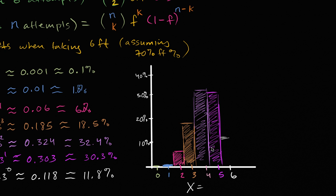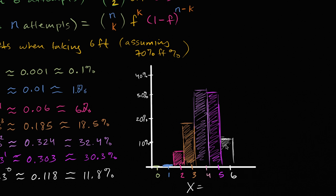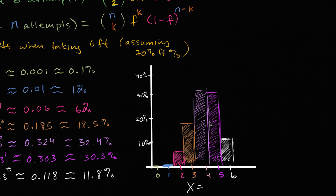Really this whole video was just an exercise in making a histogram, but it's useful because you actually visualize what the distribution looks like. And what's really interesting is to think about how this changes as you change the free throw percentage or the number of shots you take — how does this change the binomial distribution? You can do that on a spreadsheet and actually see how it all works out.